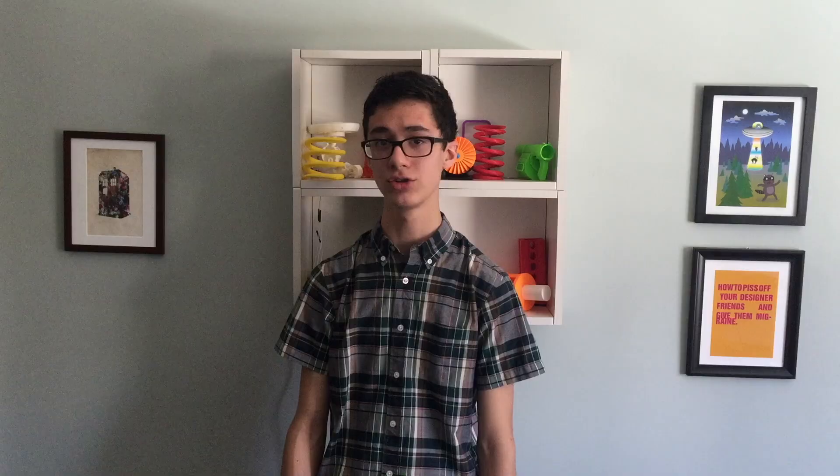Now, this is by no means a complex soft robot, but it doesn't need to be. The Crawly shows that with only one air source, you can make a soft moving structure.